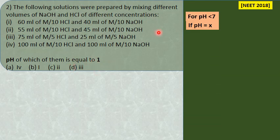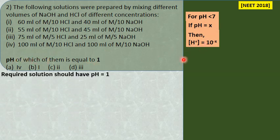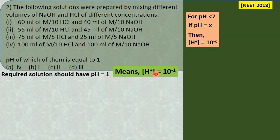pH equal to 1 means the hydrogen ion concentration equals 10⁻¹. So we need to find a solution where the mixture's hydrogen ion concentration equals 10⁻¹. We apply the same formula from the previous problem.